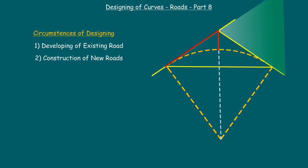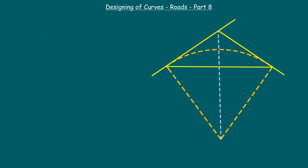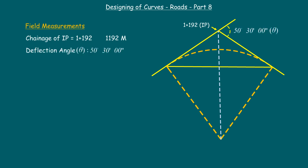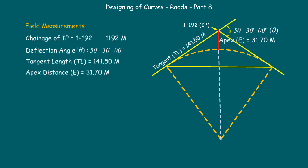These are all the basic requirements from the field for the design of a simple curve. Now let us see a sample design. The following measurements are taken from the site: one, the chainage of the intersection point is 1+192, that is 1192 meters; two, the deflection angle is 50 degrees 30 minutes; three, the approximate tangent length measured at site is 141.50 meters; and four, the approximate apex distance measured at site is 31.70 meters.